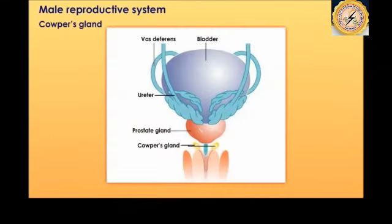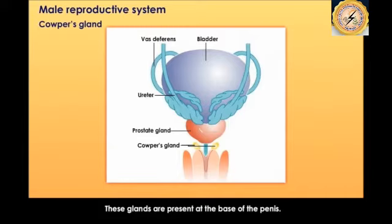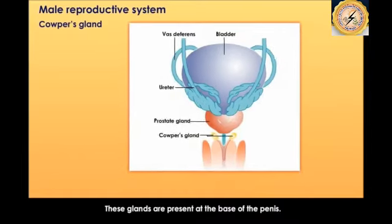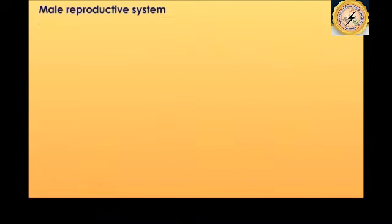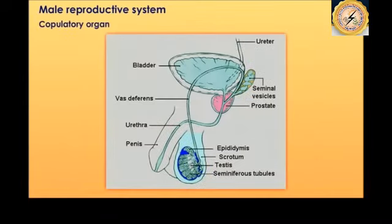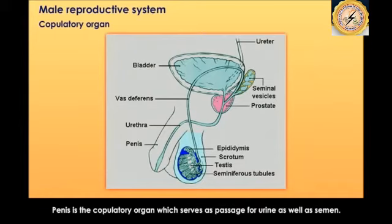The Cowper's glands are present at the base of the penis. They mainly produce mucus to provide lubrication to the vagina and neutralize the acidity of the vagina. The penis is the copulatory organ which serves as a passage for both urine and semen.